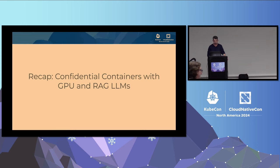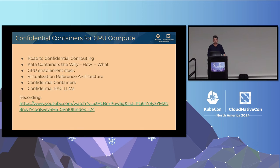Who has been in KubeCon EU in Paris may have seen my talk on confidential containers with GPU and RAG LLMs. To recap what we've done in this space: I talked about the road to confidential computing, why we chose Kata for implementing confidential compute with GPUs on Kubernetes, explained the GPU enablement stack, the virtualization reference architecture, what we need to enable advanced use cases like GPUDirect, RDMA, or GDS, how we implemented confidential containers, and how we can run RAG LLMs with confidential containers.